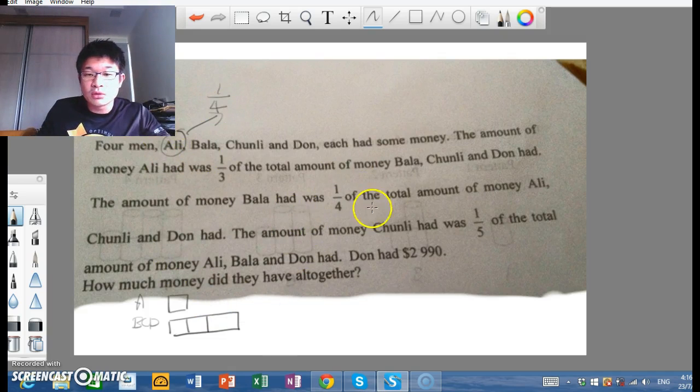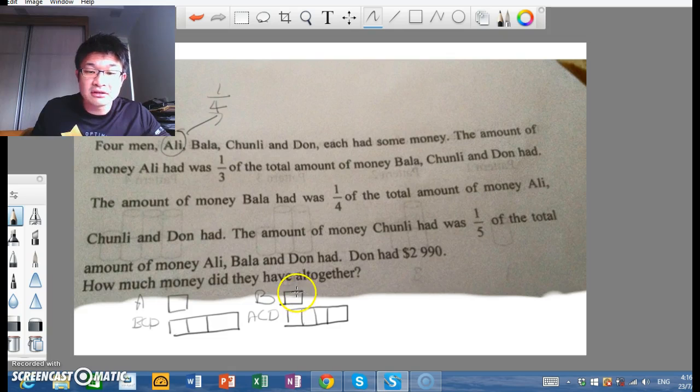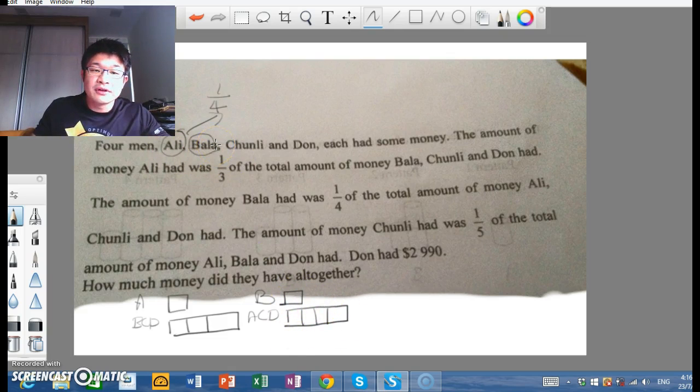For Bala, Bala had one-quarter the total amount of money. Bala, Ali, Chunli, and Don had. So similarly, if we talk about Bala, I'm going to talk about Bala here, A, C, and D. Bala has got one part, whereas these other fellows here will have four parts. And again, when we look at Bala, Bala has got one-fifth of the total amount of money. So here we have Bala has got one-fifth the total amount of money.